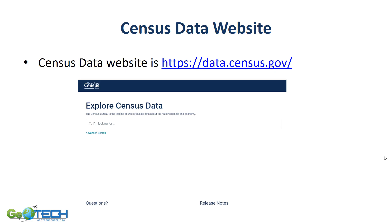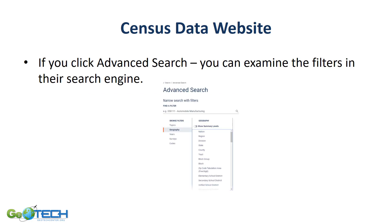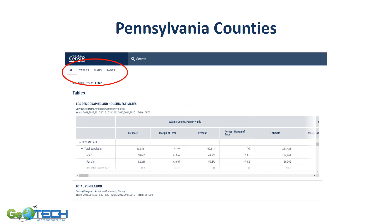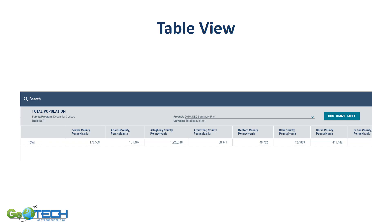You can access this data at data.census.gov. Using the advanced search, you can apply filters such as selecting county as your geography, then choosing Pennsylvania and all counties. The results can be viewed as a table, map, or pages — the table view lets you examine each individual number with its county.